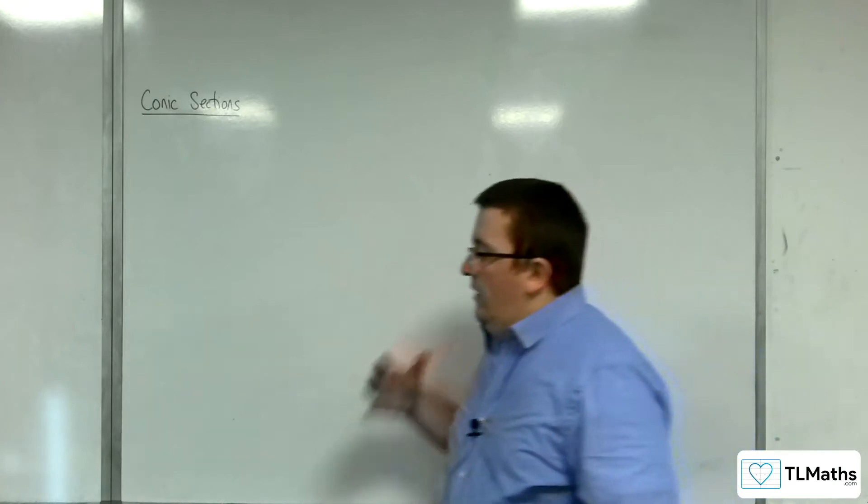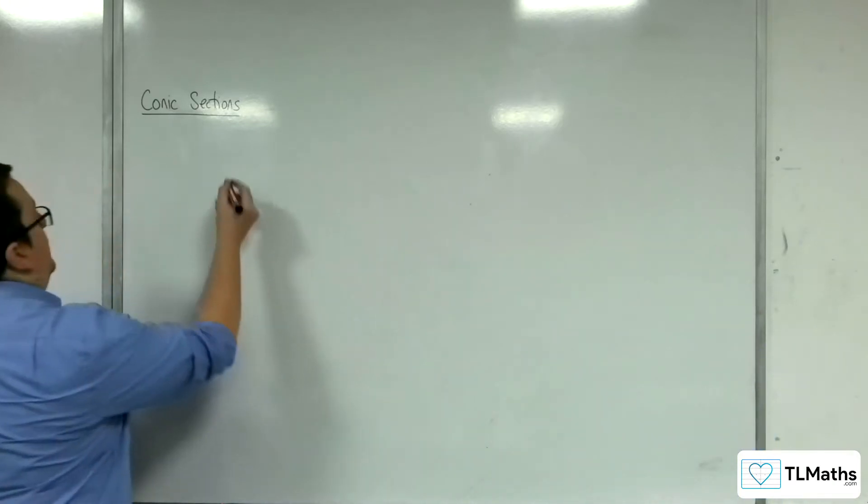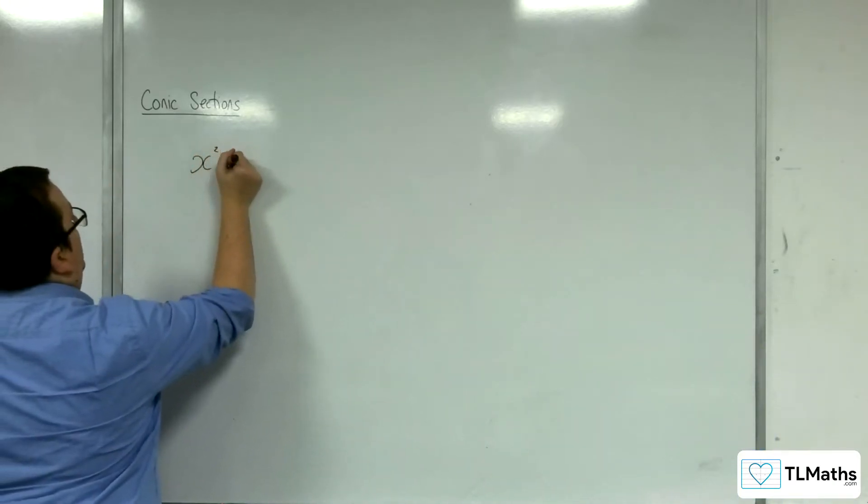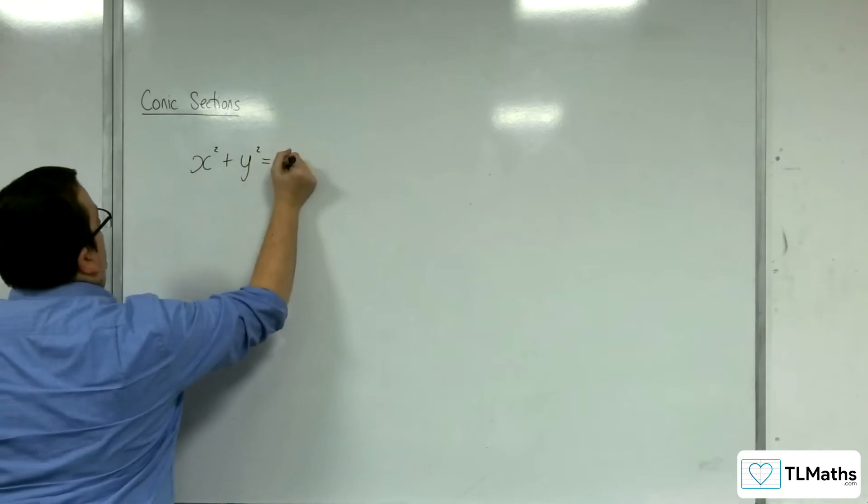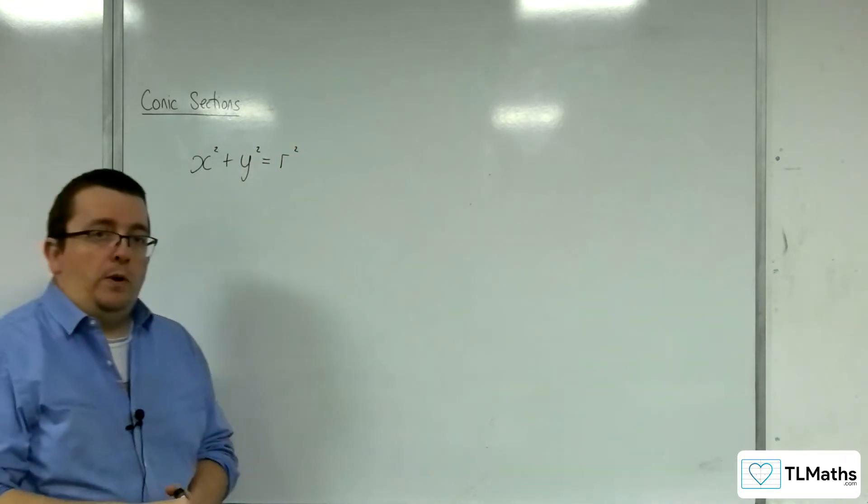So, in general, if we have a circle centered at the origin with radius r, then its equation is x squared plus y squared equals r squared.